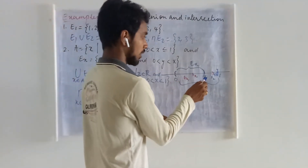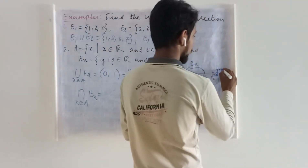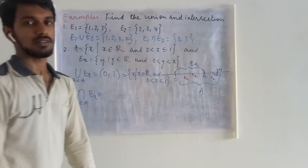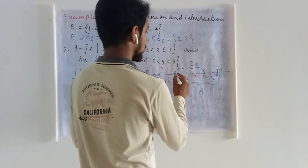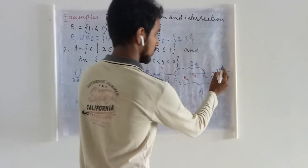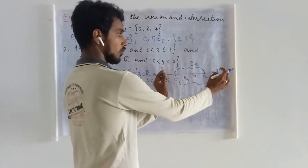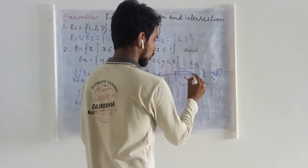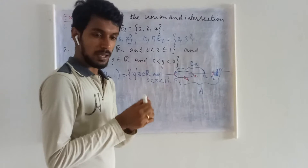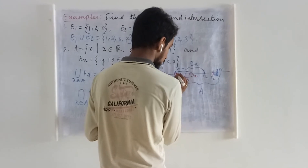Now let us consider the intersection. Take selected points X, X1, X2, X3, X4, and X5. The set Ex5 is the largest, followed by Ex4, Ex3, Ex2, Ex, and Ex1. When you take the common points of all these sets, you get only the smallest overlapping portion. As you choose more points, including points very close to zero, the intersection keeps shrinking.